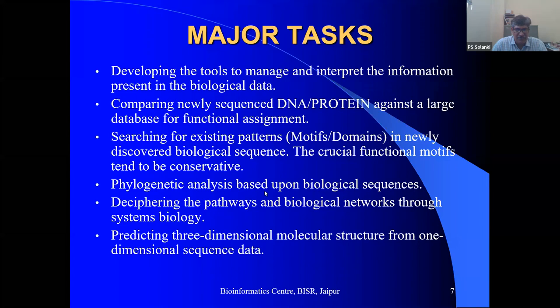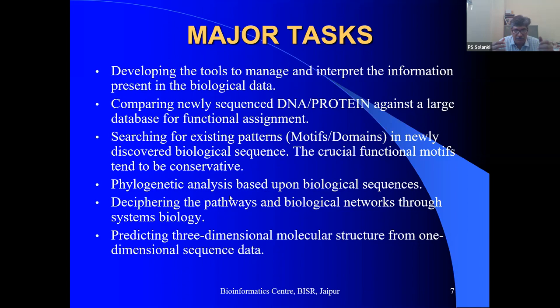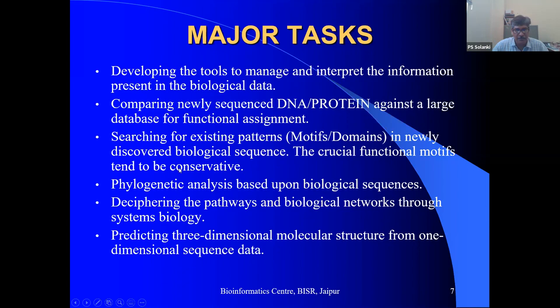Phylogenetic analysis establishes evolutionary relationships based on DNA or protein sequences. Protein sequences are quite good for this; 16S rRNA is commonly used to establish relationships in bacteria. Another important task is deciphering pathways and biological networks for systems biology — given a list of genes, we identify whether they are working together in a specific pathway using tissue-specific gene expression analysis.